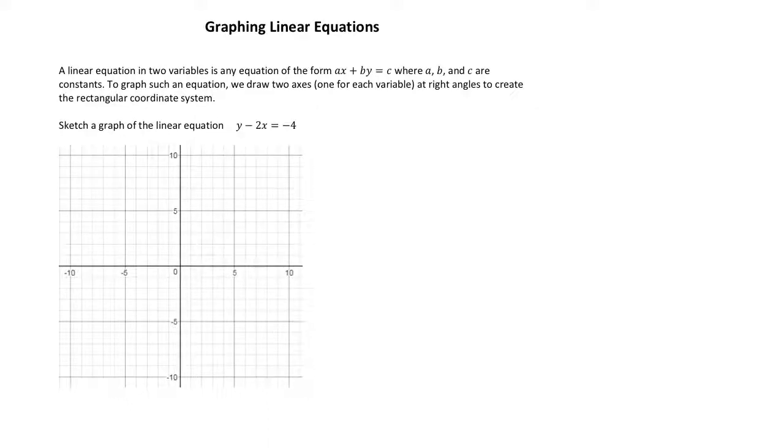A linear equation is anything of the form AX plus BY is equal to C, and A, B, and C just represent some constants. Our goal is, if I'm given, let's say, Y equals negative 2X minus 4, what does its equation look like in the XY plane?